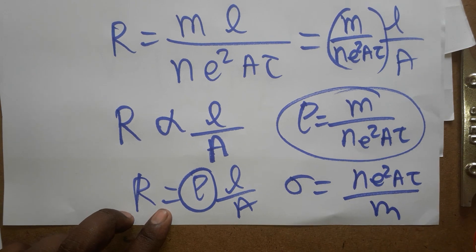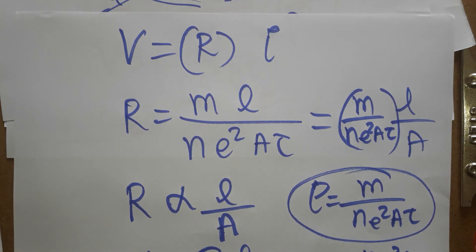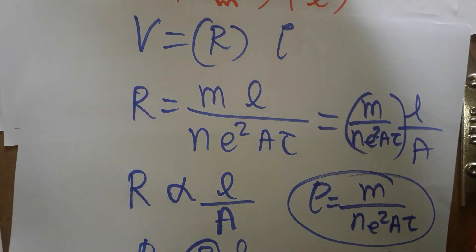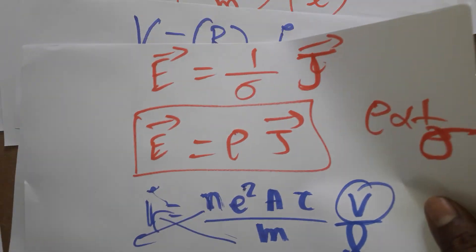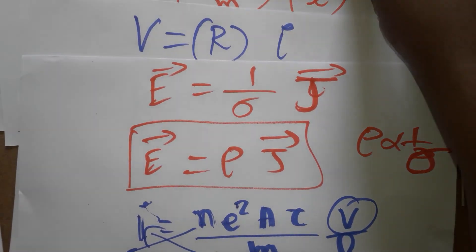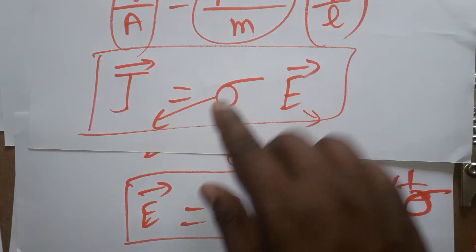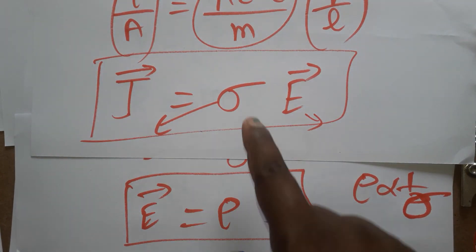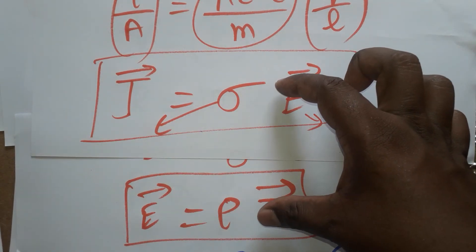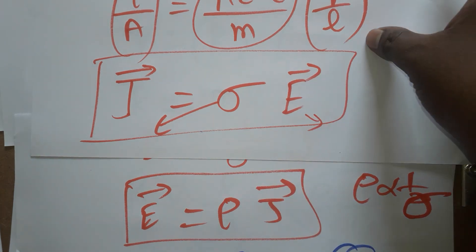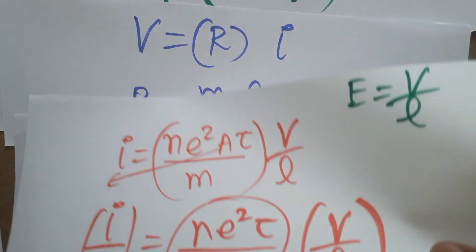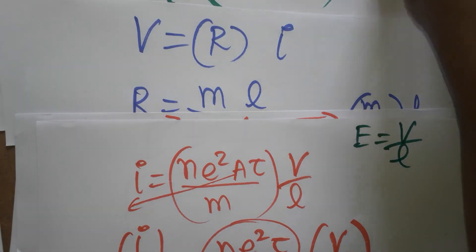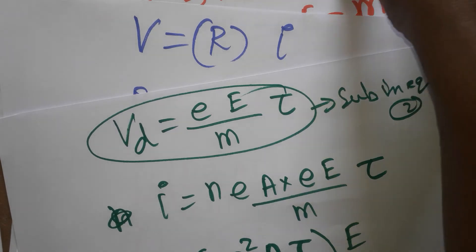In this video we found the vector form of Ohm's law: J = σE, which can also be written as E = ρJ using resistivity. We derived expressions for both conductivity and resistivity. Thank you for watching — if you like my channel please subscribe.